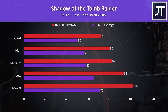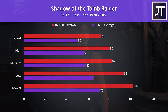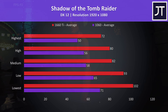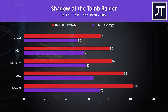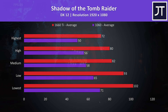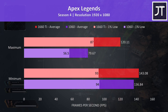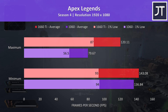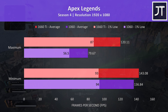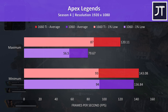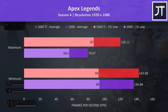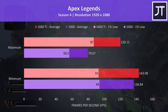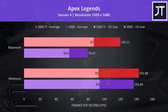Shadow of the Tomb Raider was tested using the built-in benchmark. The 1660 Ti was again ahead in all tests with a 44% lead in average FPS with the highest setting preset. Apex Legends was tested by running through the same section of the map on both laptops. Both were about the same at minimum settings due to a default frame cap, however maxed out even the 1% low from the 1660 Ti is ahead of the average from the 1060.